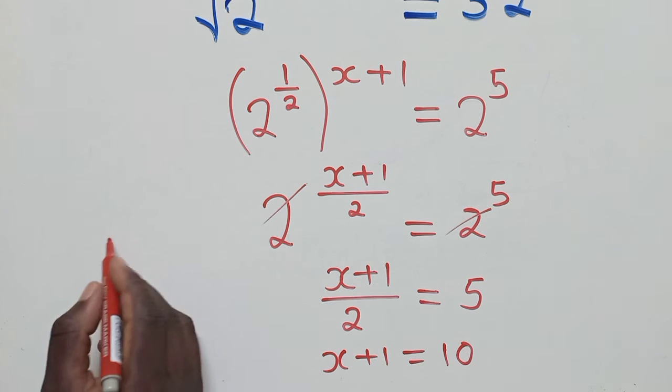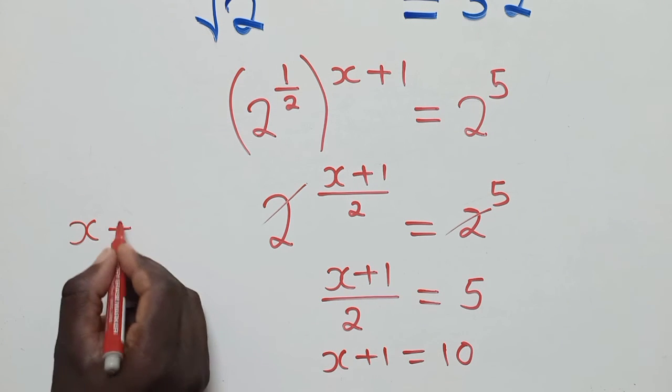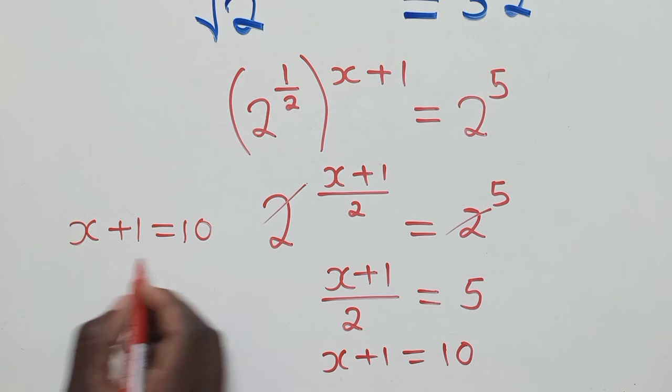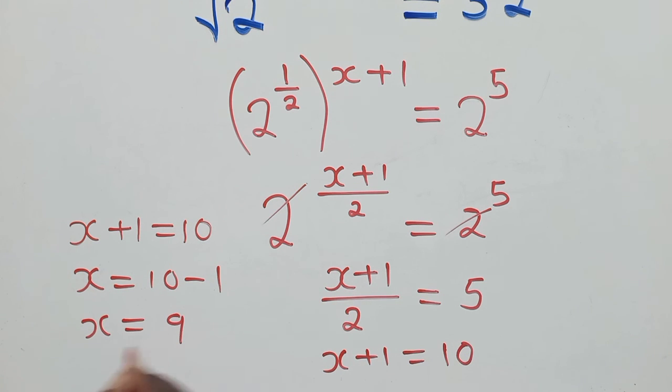So from here, let me put it up here. We have x plus 1 equal to 10. Solving the equation here, group the like terms. So we shall have this, of which our answer will just be 9, equal to 9. This one, across the equal side, it will be negative 1. 10 minus 1, it's 9.